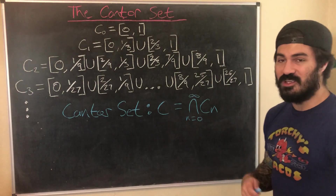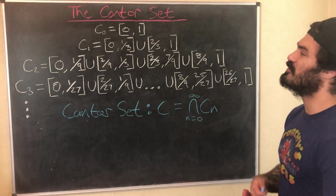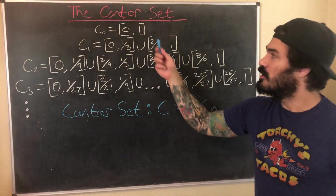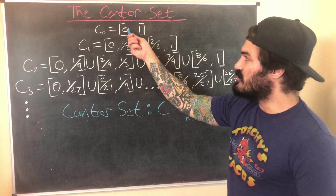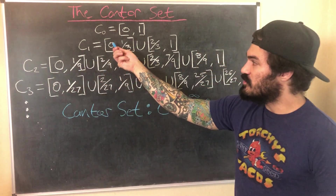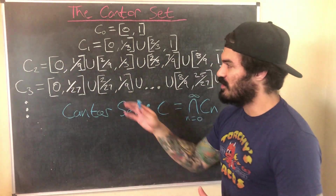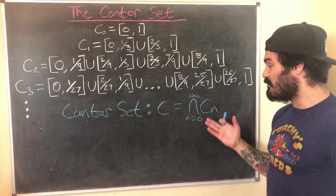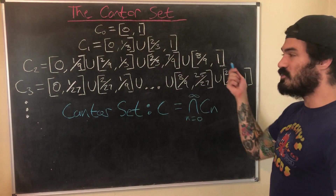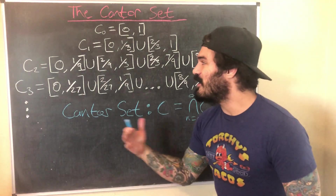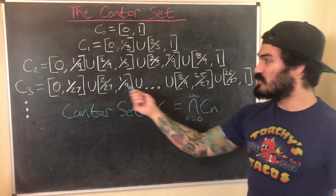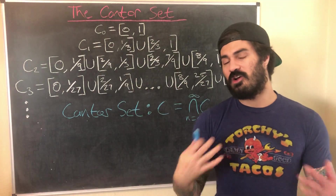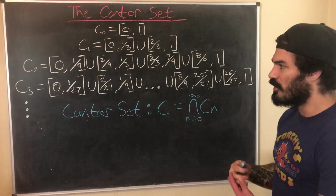Let's get some intuition about what is actually an element of the Cantor set. Once we have an endpoint in any of these intervals — for example, 0 and 1 are endpoints of our first interval — they remain endpoints forever, since we only remove open middle thirds. So 0 and 1 are in every set and therefore in the infinite intersection. By the same logic, any endpoint at any stage is an element of the Cantor set: 0, 1, 1/3, 2/3, 7/9, 2/27, and so on.